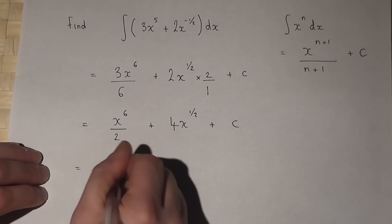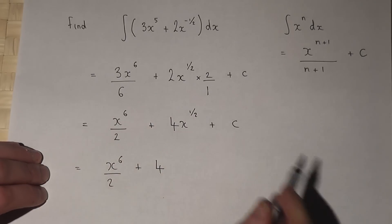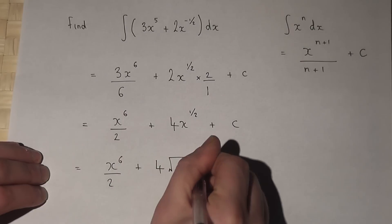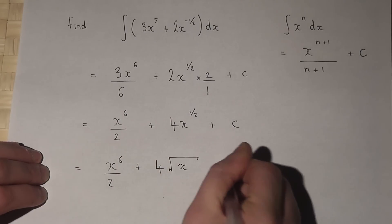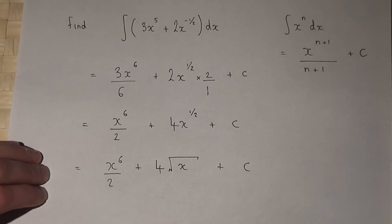And to finish off you might write it as 4x to the power of a half means square root of x plus c. But both of those are equally valid answers.